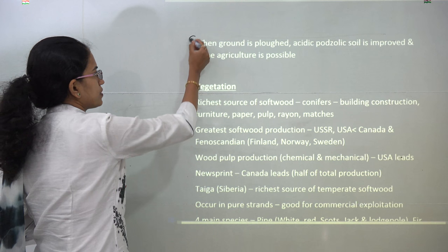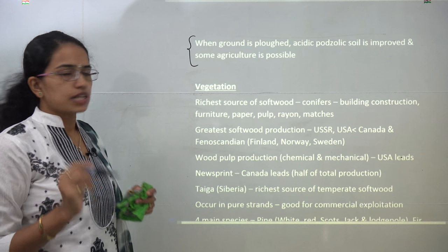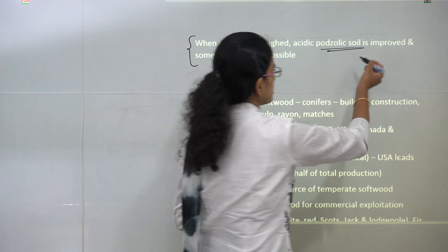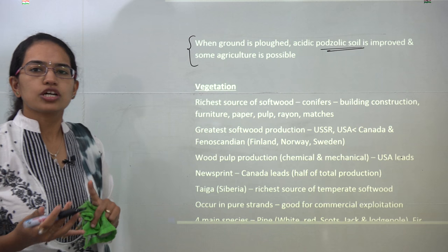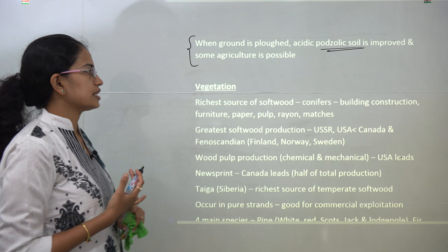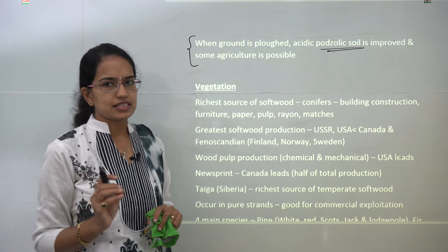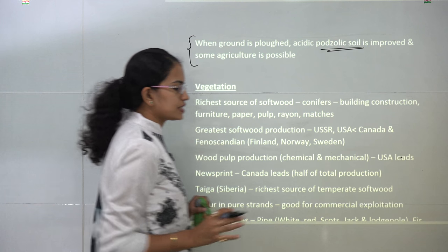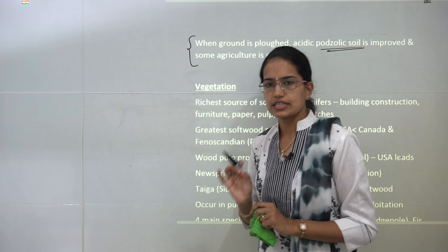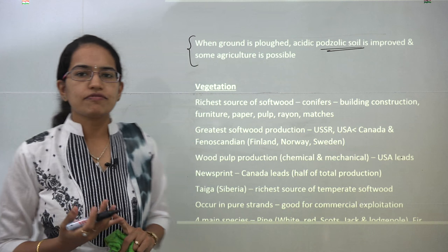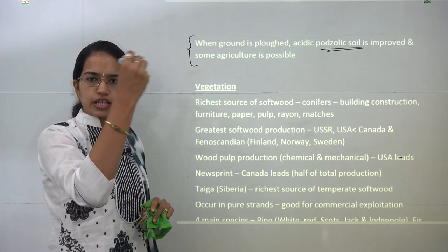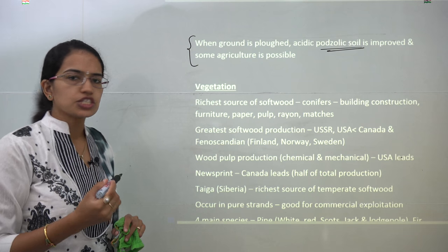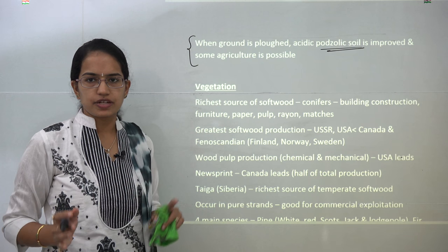When the ground is plowed, you have podzolic soil found in this region, which is predominantly acidic. The soil is improved during this time, and minor agriculture can be seen in this region. The primary vegetation is conifers, which vary based on height: in the north you have pine, and in the south you have larch.